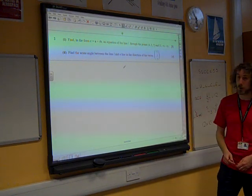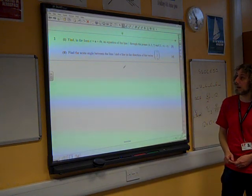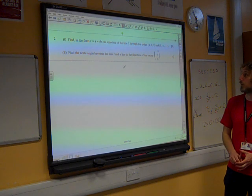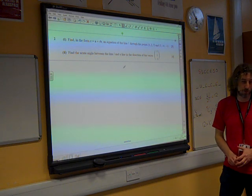Question 2. Find in the form R equals A plus T B, an equation of the line L through the points 427 and 5 minus 4, 1.